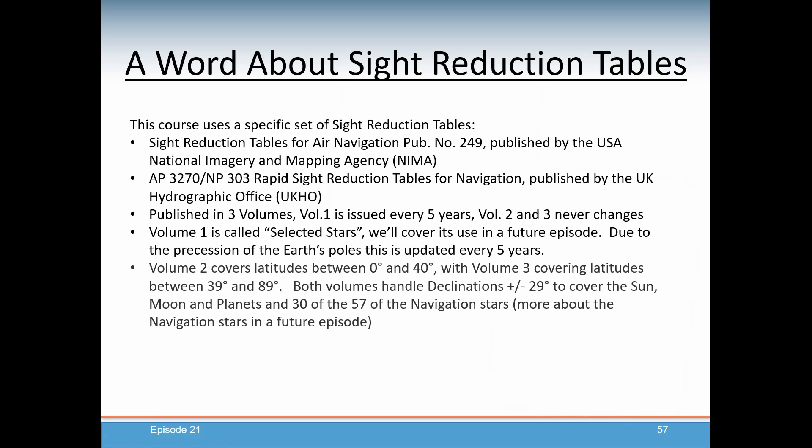These are published in three volumes. Volume 1 is issued every five years. Volume 2 and 3 never change. Volume 1 is called Selected Stars, which we'll cover in a future episode. This has to be updated every five years due to the precession of the Earth's poles. Volume 2 covers latitudes between 0 and 40 degrees, and Volume 3 covers latitudes between 39 and 89 degrees. Both volumes handle declinations of plus or minus 29 degrees, which is enough to cover the Sun, Moon, and planets in 30 of the 57 navigation stars.